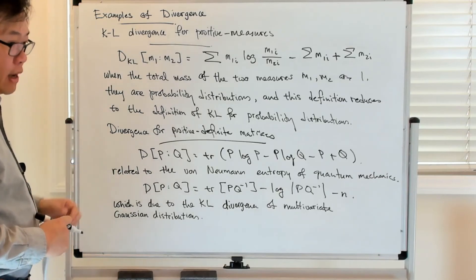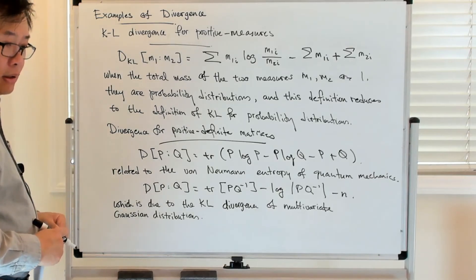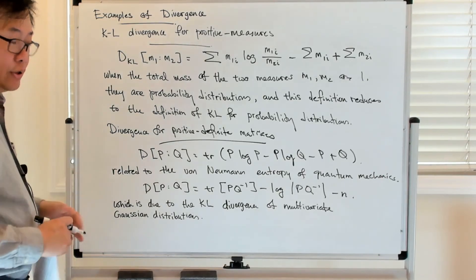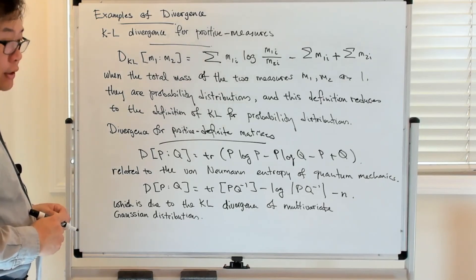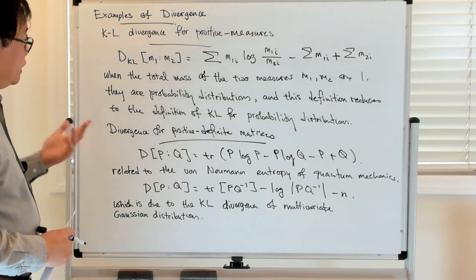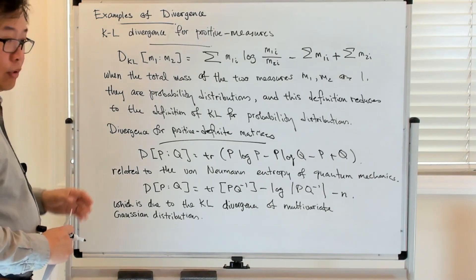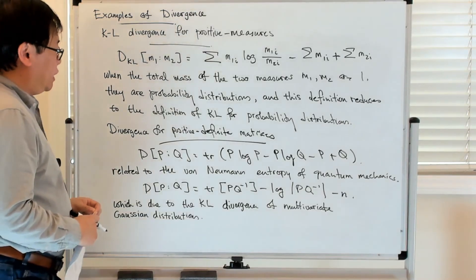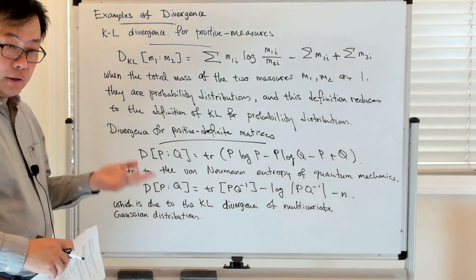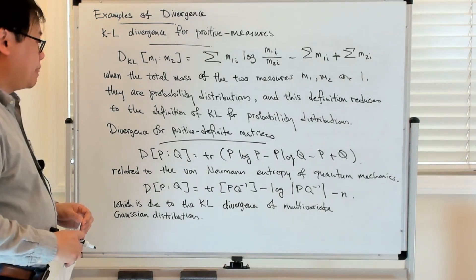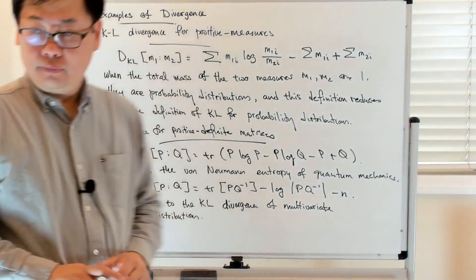And then the next thing which we'll talk about is this idea of the Bregman divergences, which are associated with certain convex functions. And again, the reason for studying Bregman divergences is because the KL divergence, which plays an important role in many applications, is a special case of a Bregman divergence. All right, so let me just stop here for now. Thank you.